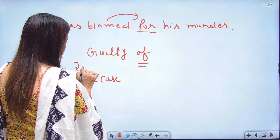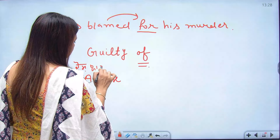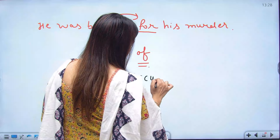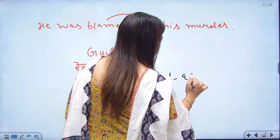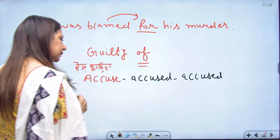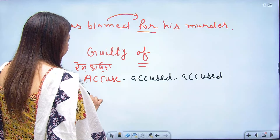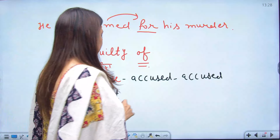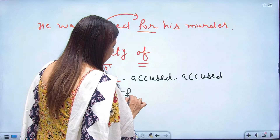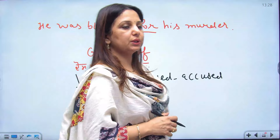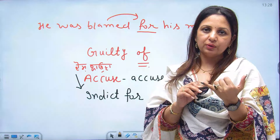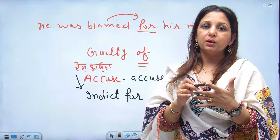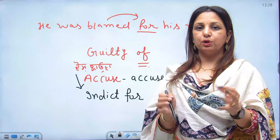Accused is a verb. Indict is another verb — getting accused. 'Indict' means to charge someone with a wrongdoing, and the preposition used with 'indict' is 'for'. So the full list is: accused of, charged with, blame for, indict for, and guilty of.